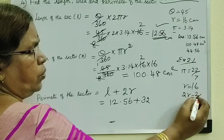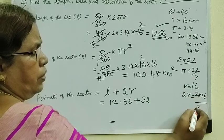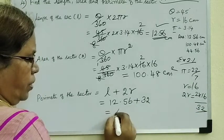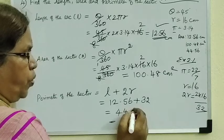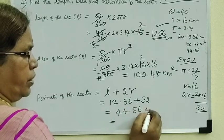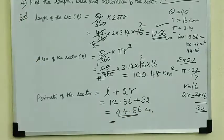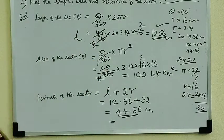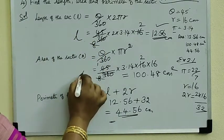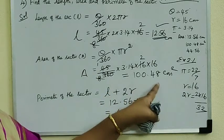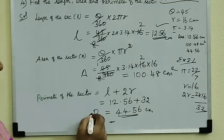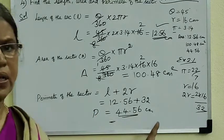2R equal to 2 into 16 equal to 32. So the answer for this is 44.56 cm. So length L equal to 12.56, area equal to 100.48 cm squared, then perimeter equal to 44.56 cm.